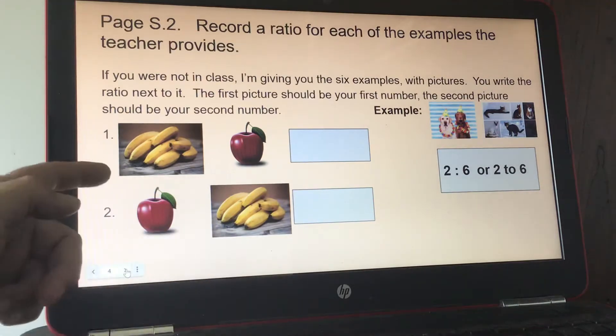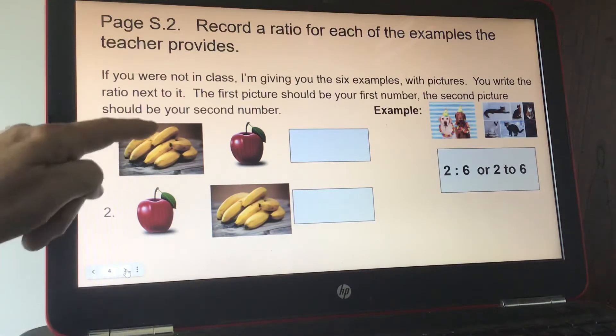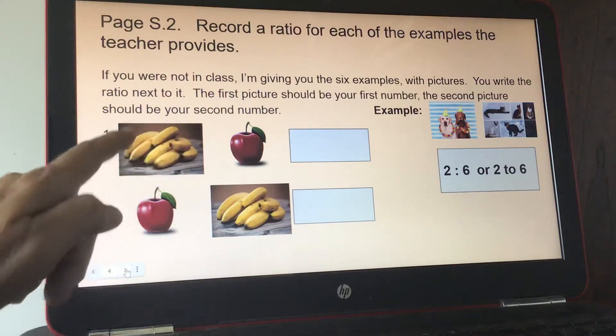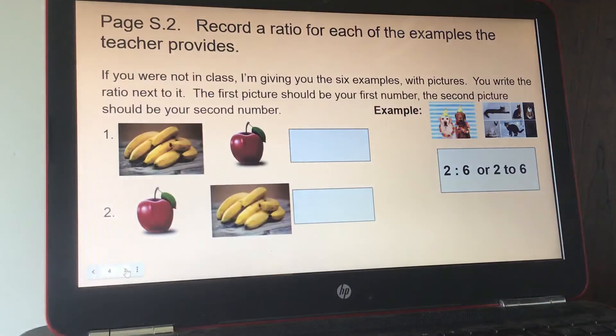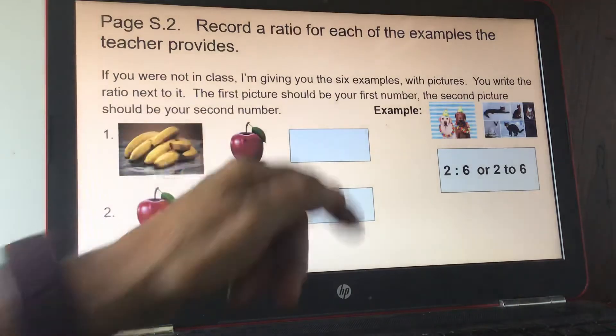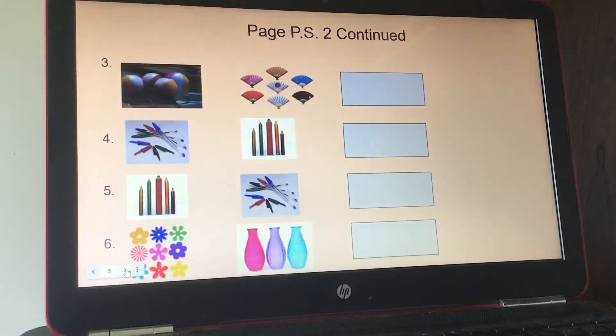So for number 1, you count the bananas, 1, 2, 3, 4, 5, 6, 7. So it would be 7 to, how many apples there are? 1, 7 to 1. Whoops, I helped you with 1. You're welcome.